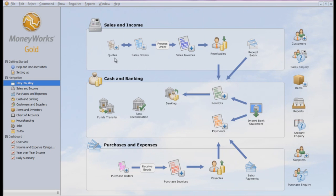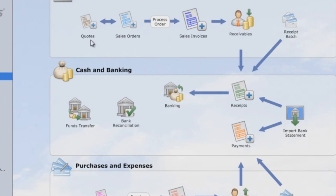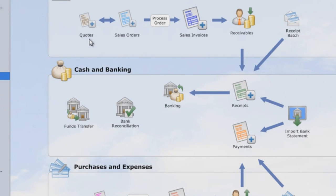Let's start with sales. You will generate quotations to your customer and you may have many revisions of your quotations. Once customers confirm the order, you will convert the quotes into a sales order. And when you are ready for your service or your goods are ready for delivery, you will convert it into a sales invoice. So you notice that from quotation to sales invoice, you just need to have one entry.